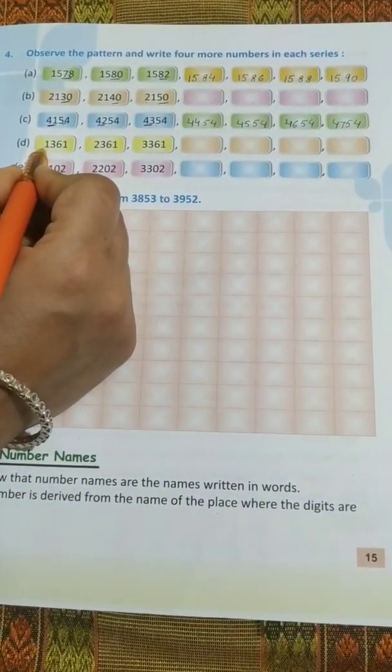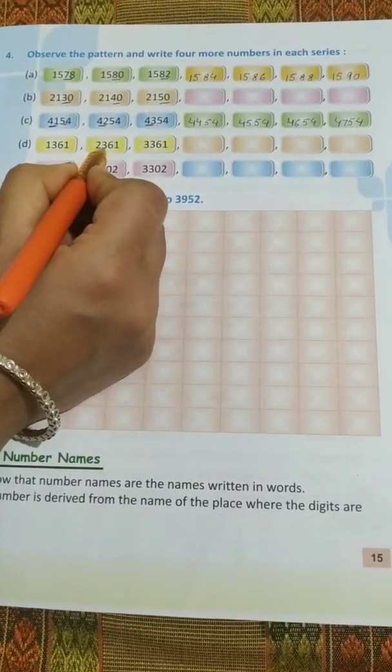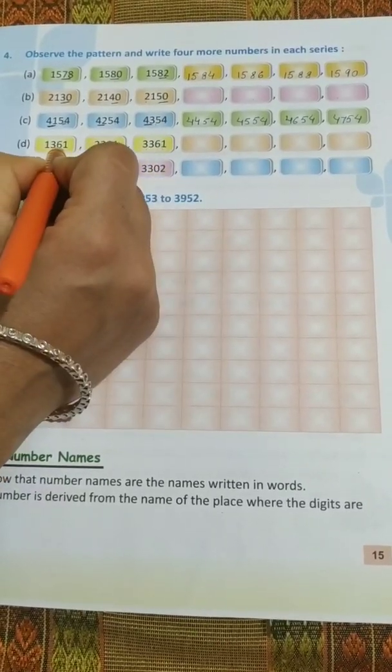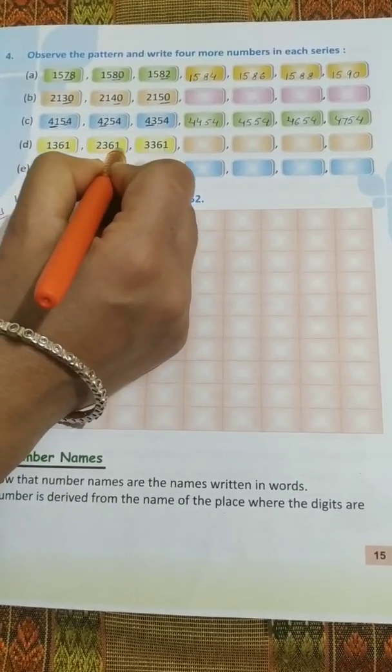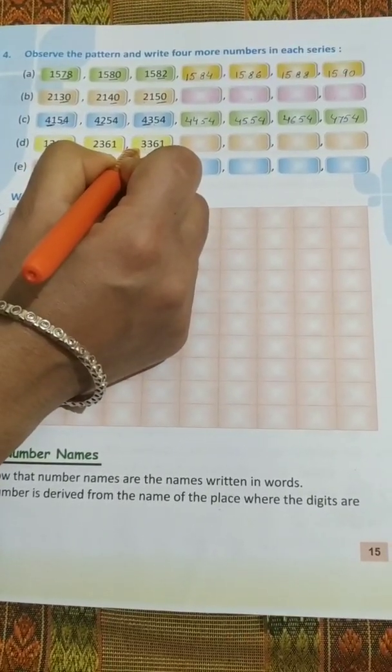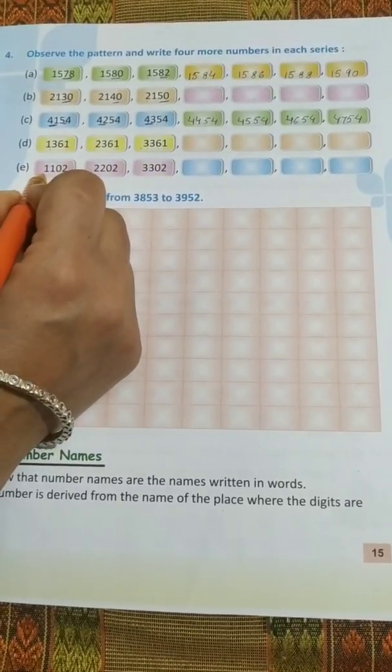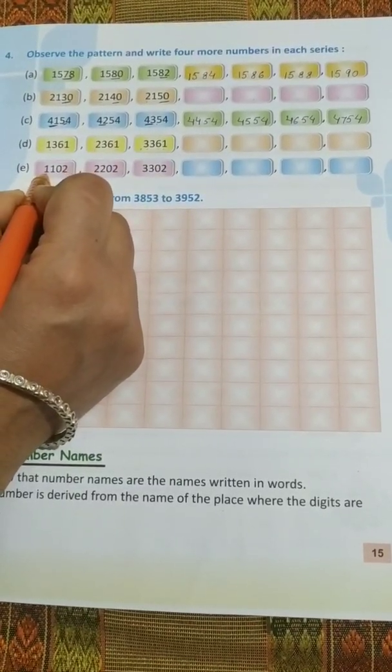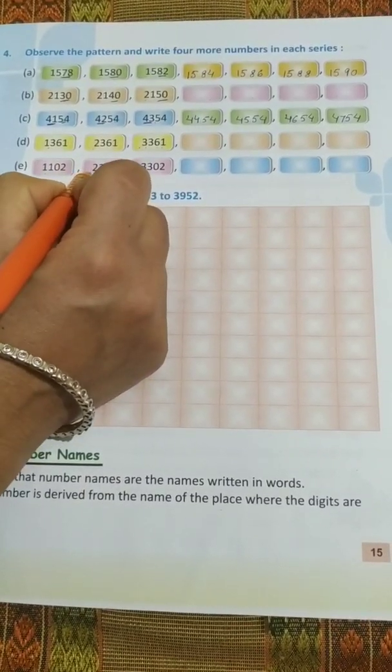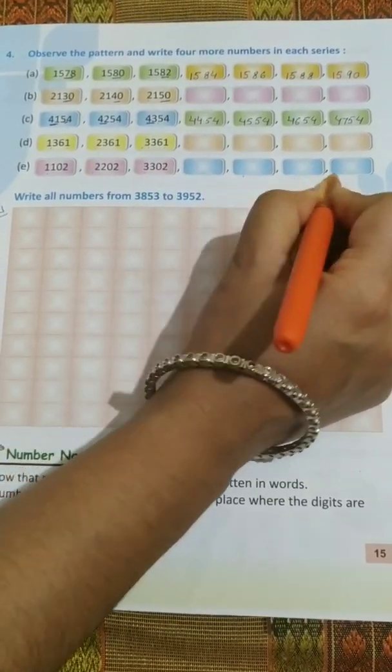In the D part: 1361, 2361, 3361. Here 33 numbers are same. Only the first digit, only the first digit is changing. So you people can do it yourself. Here also E part is also very easy. Only the first two digits are changing. 11 is changing to 22, 22 is changing to 33, then 44, 55, 66, 77.